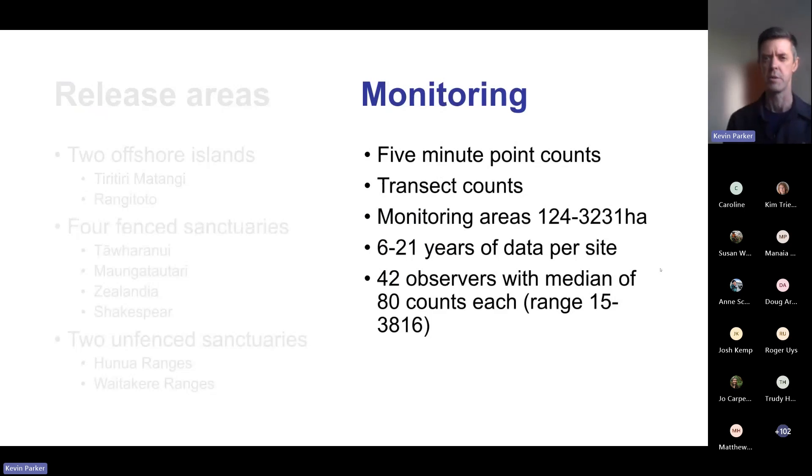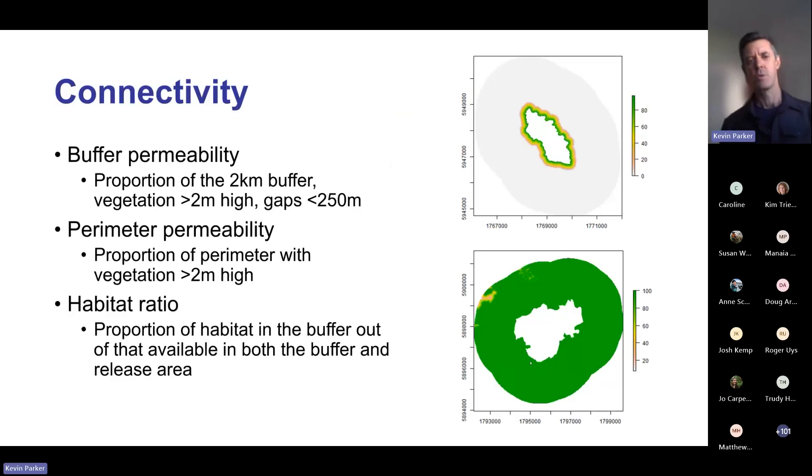We chose these eight sites out of the 21 because they have really good monitoring data. At most sites it was five minute point counts, at some there were also transect counts where an observer walks slowly along a transect counting all birds heard and seen 10 meters either side of the line. The monitoring areas varied in size from around 120 hectares to 3200 hectares. There were 6 to 21 years of data per site, and 42 observers collected these data with a median of 80 counts each and a range of 15 to almost 4000 counts.